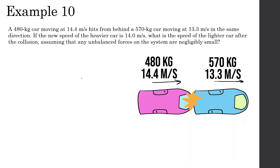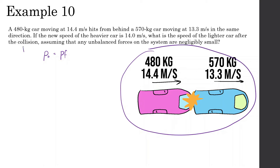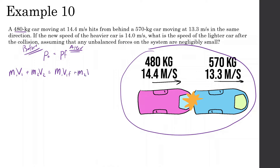Whenever we're doing problems like this we should be looking at the conservation of momentum formula: momentum initial equals momentum final. We want to think about what happens before the collision — that's momentum initial — and what happens after the collision — that's momentum final. Before the collision, we have a mass of 480 traveling with a certain velocity plus the mass of 570 traveling at a certain velocity. After the collision, each object has a final velocity.